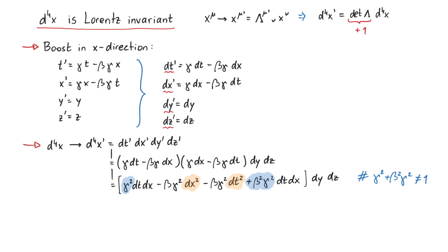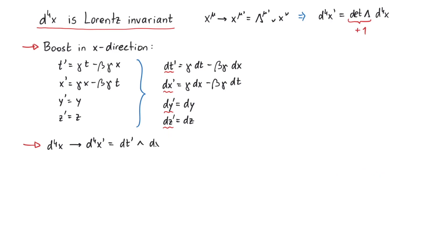The solution to this riddle is that this equation is actually wrong. The mathematically correct way to describe an n-dimensional volume element is to use the wedge product. So what is this wedge product?